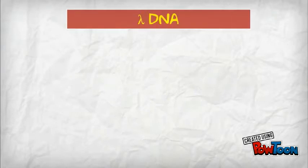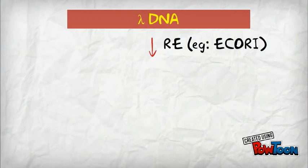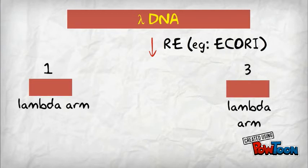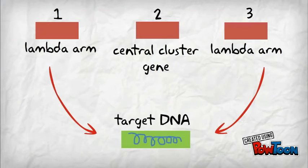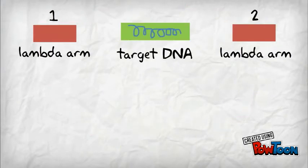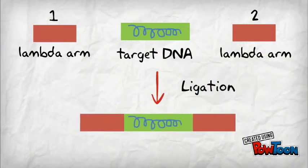The vector and the insert are cut using restriction enzyme. Once the vector is cut, it will form three fragments: two lambda fragments and one central cluster gene. The insert will replace the central fragment. After that, they are joined together and form the recombinant DNA.